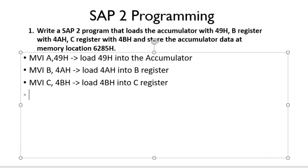So now we have loaded the contents into the respective registers and accumulator. Now we need to store the accumulator data at memory location 6285H. To store the accumulated data, we have our SIP2 instruction STA, then after the location where we are going to store — so STA 6285H.